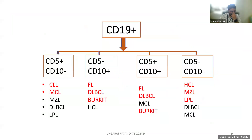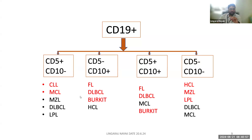For any B lymphoproliferative disorder, you divide them based on CD19 positivity, then CD5 and CD10. CD5 positive, CD10 negative includes CLL and mantle cell lymphoma. CD10 positive, CD5 negative is germinal center — follicular, DLBCL, Burkitt. CD5 and CD10 negative includes LPL, marginal zone, and hairy cell leukemia.